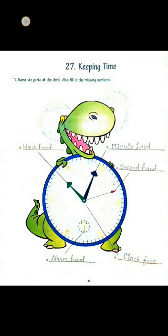Now we have to fill the blanks and name the hands of the clock. First, A — A is the hour hand. Next, B — B is minute hand. Next, C — C is second hand.